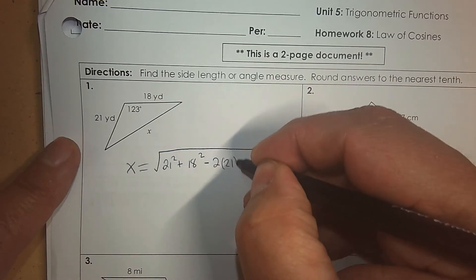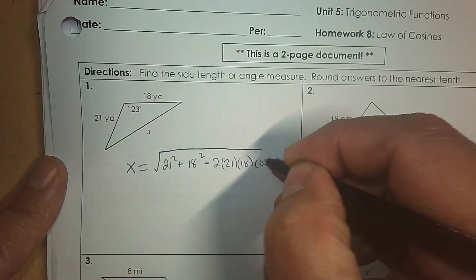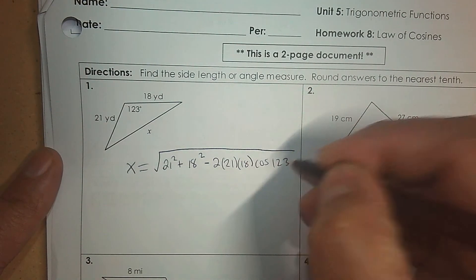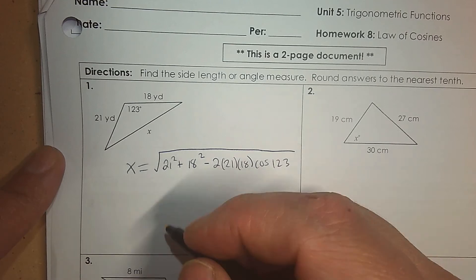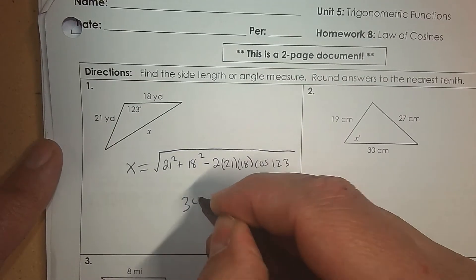And then we're going to multiply those same sides together, 21 and 18, and then it's times the cosine of the angle that's in between the sides, which is 123. That's what you're going to type in. If you did it correctly, the answer is 34.3 yards.